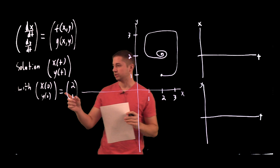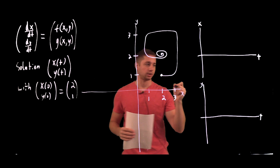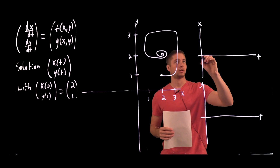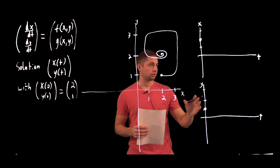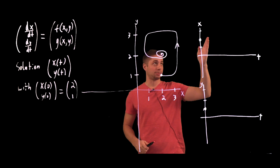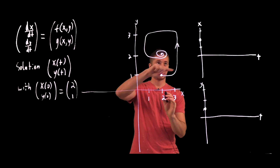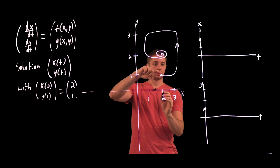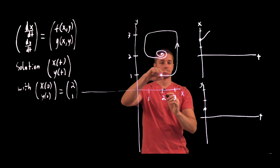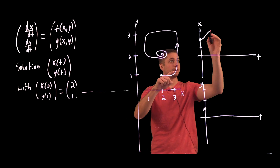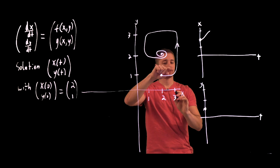What does it mean that we start at the point 2 comma 1? In the phase plane, our solution begins at the point where x is 2 and y is 1. So at time t equals 0, x is 2 and y is 1. Once we turn on time, we start moving in this direction along the solution curve, and the x-coordinate increases from 2 to 3. At that point, the x-coordinate kind of levels off and stays roughly constant as we move forward in time.